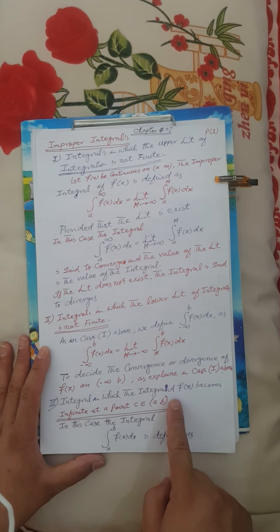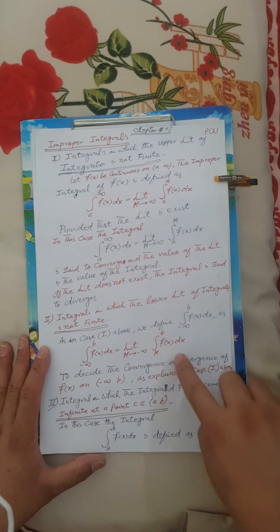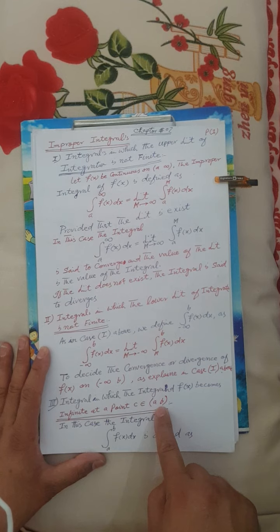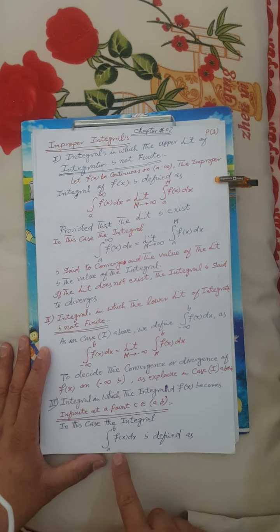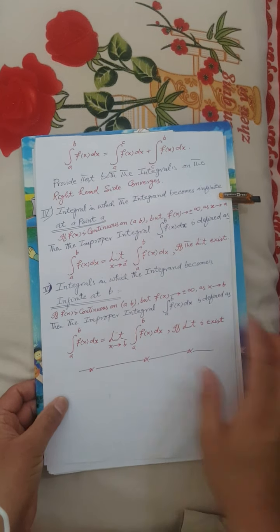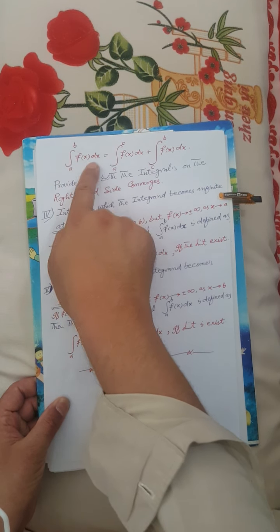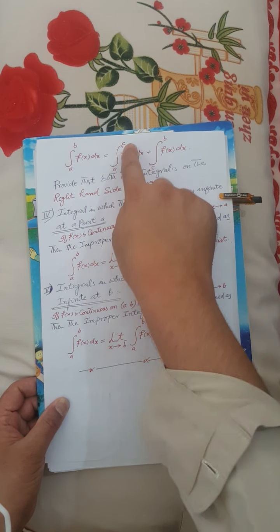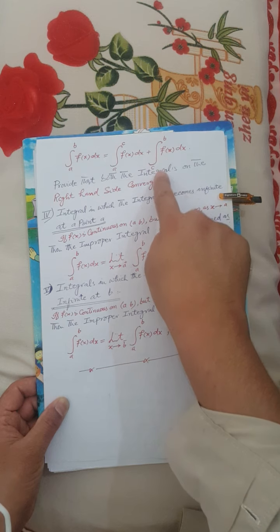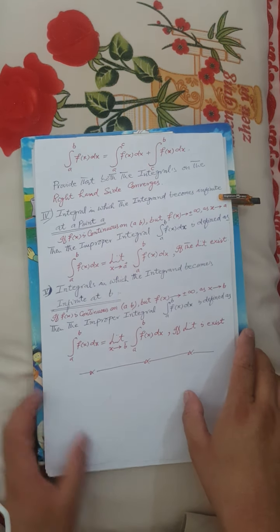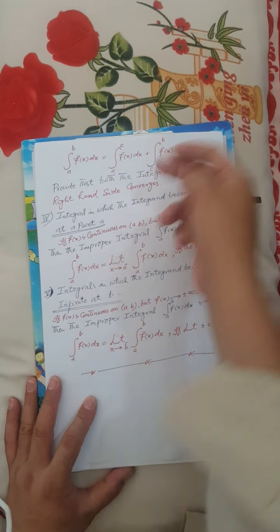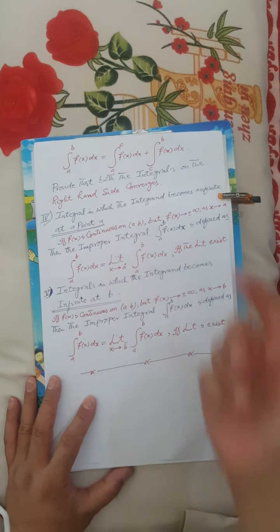Third condition: the integrand f(x) becomes infinite at a point c on the interval [a, b]. In this case, the integral from a to b of f(x) dx is defined as the integral from a to c of f(x) dx plus the integral from c to b of f(x) dx, provided that both integrals on the right-hand side are convergent.